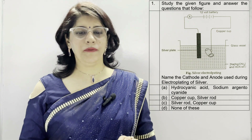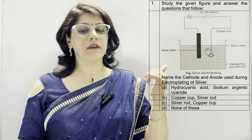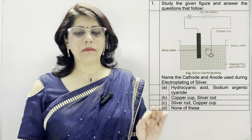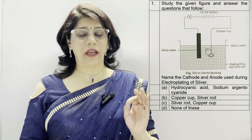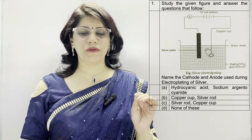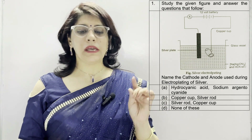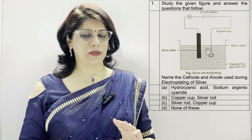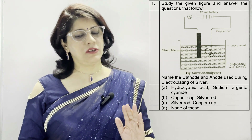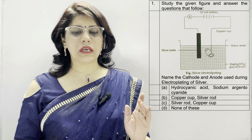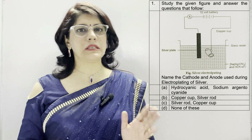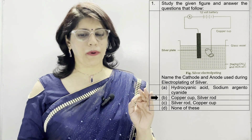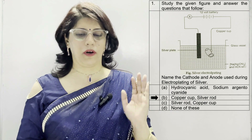Starting with the first question: study the given figure and answer the question that follows. Name the cathode and anode used during electroplating of silver. Option A is Hydrocyanic Acid and Sodium Argentocyanide. B is Copper Cup and Silver Rod. C is Silver Rod and Copper Cup, and D is none of these. The correct option is B: Copper Cup and Silver Rod.